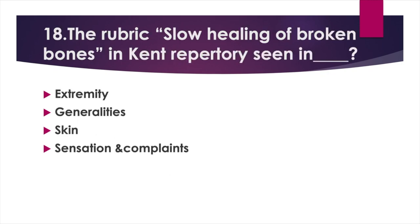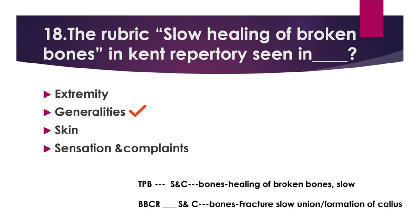The rubric 'slow healing of broken bones' in Kent's Repertory is found under — Option A: Extremities, Option B: Generalities, Option C: Skin, Option D: Sensation and complaints. Answer: Option B, Generalities. In TPB: Sensation and complaints > Bones > Healing of broken bones, slow. In BPCR: Sensation and complaints > Bones > Fracture, slow union or formation of callus.